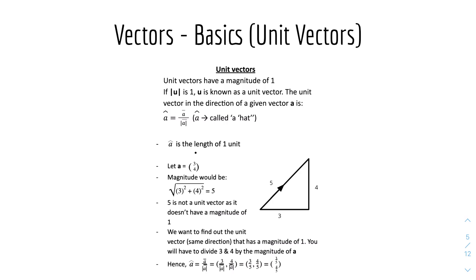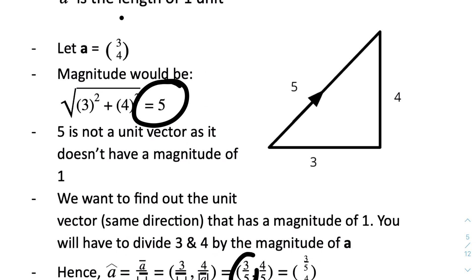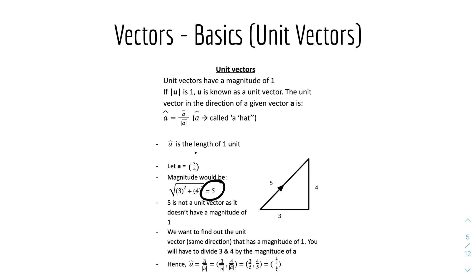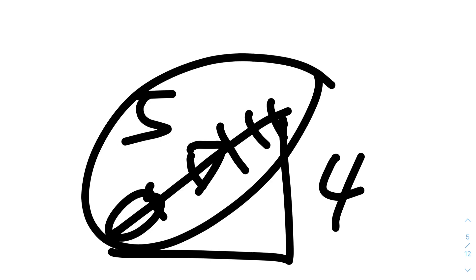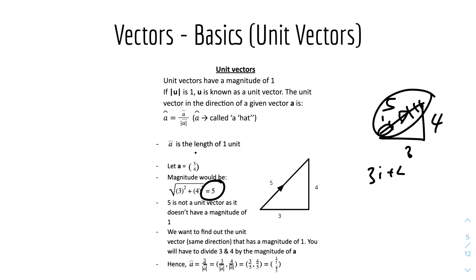So an example would be: if A equals (3, 4), then the magnitude would be 5. But 5 is not a unit vector because it has a magnitude of 5 and not 1. Therefore, we have to divide the vector by the magnitude, which is 5. Therefore, it would be (3/5, 4/5). Think of it this way: if the resultant magnitude is 5, we have to split it into 5 equal sections and divide the vectors by 5 to get one unit. So it would be 3i plus 4j over the magnitude, which is 5.